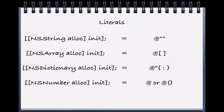We've been introduced to a bunch of new literal syntax for creating objects. This is shorthand for allocating and initializing our objects and immediately giving them values. We've already been introduced to the NSString literal syntax, which is at-quote, and we can add characters inside of it. We also have literal syntax for arrays, dictionaries, and numbers. While not required, it's often advantageous to use these literal syntaxes because it makes our code much easier to read and it's actually faster to type.